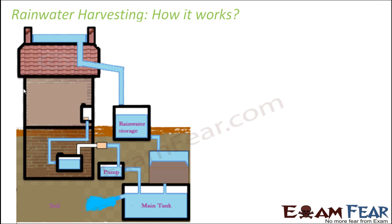This is how it works. Let's say this is your building and this is the roof of your building. When it rains, water flows from the cemented area of the rooftop to this rainwater storage tank. You have a set of pipelines arranged in a specific way so that whenever it rains, the water passes through these pipes and gets stored in this rainwater storage. You have a big tank here to store the rainwater.